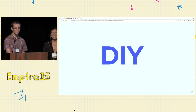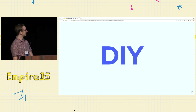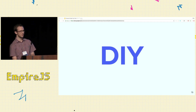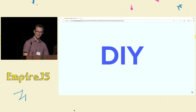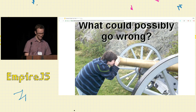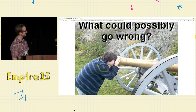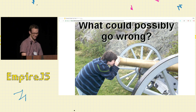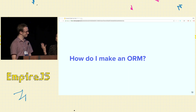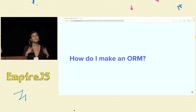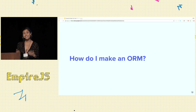We decided to DIY because of that — we decided to make one ourselves. We made our own ORM: it's custom, bespoke, small batch, artisanal, and it's ours. What could go wrong when you build something like that yourself? Nothing. So you might be wondering: how did you do this? We're going to walk through some of the main features of an ORM and explain exactly how we implemented it.